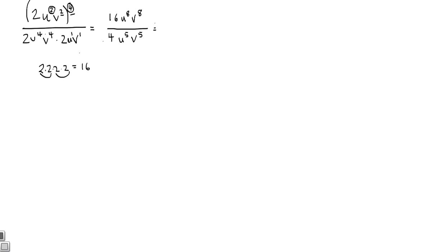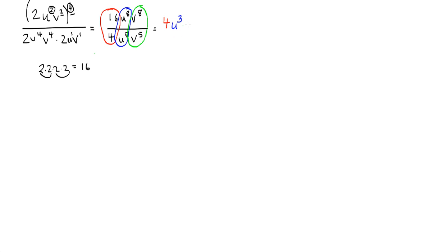Now we simplify. Treat the numbers normally: 16 divided by 4 is 4. For the u's: u to the eighth divided by u to the fifth — subtract the smaller from the bigger, 8 minus 5 is 3, and the larger exponent was on top, so u to the third. Same for v's: v to the eighth over v to the fifth gives v to the third. Our answer is 4u to the third, v to the third.